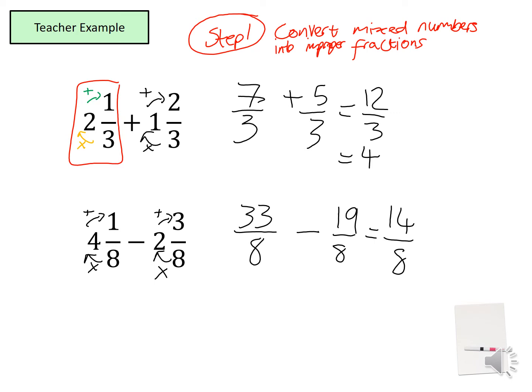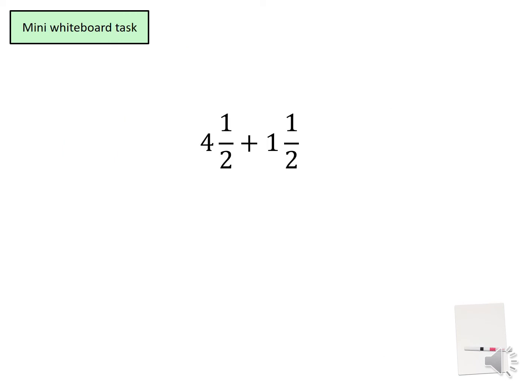Can we simplify this fraction further? Yes — the highest common factor of fourteen and eight is two. So dividing top and bottom by two gives us seven over four. Now we need to convert this back into a mixed number. Seven divided by four: one four goes into seven, and the remainder is three. So we have one and three quarters. Can you please now have a go at adding these mixed numbers? Once you're finished, come back and I'll put the answer up.